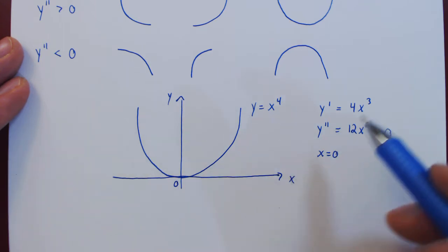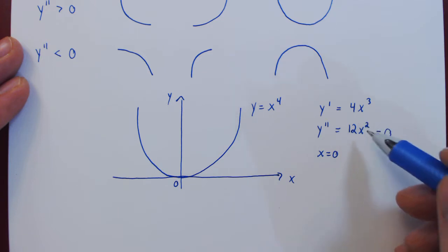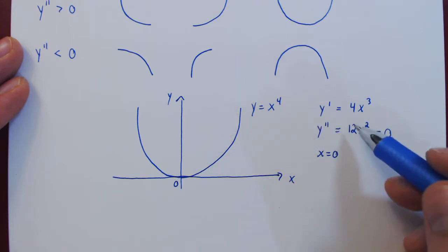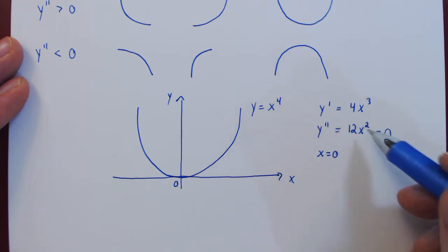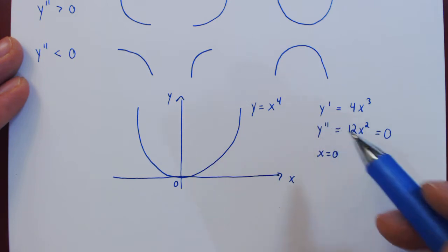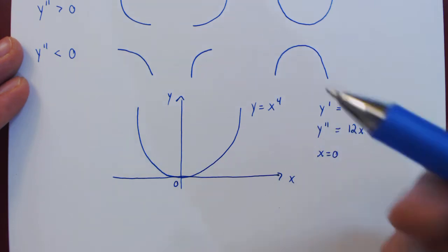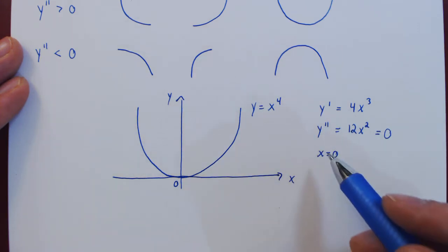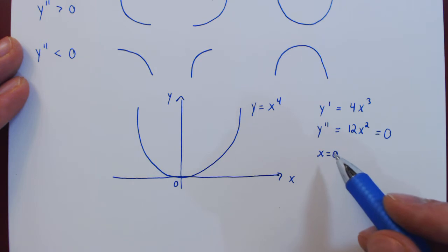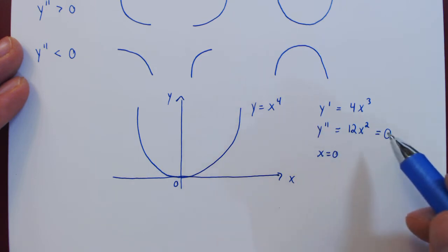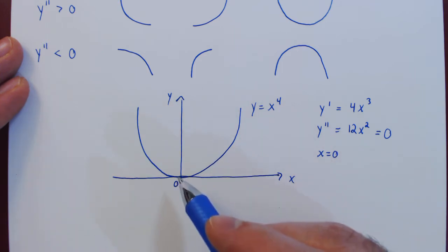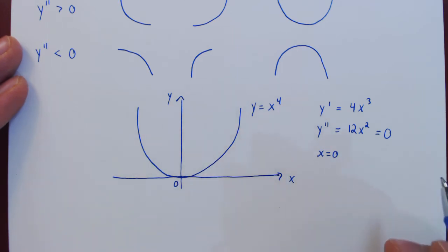This is clear from the second derivative because 12 is positive and x squared is always non-negative. So the second derivative is always either positive or 0. Therefore, since the second derivative can never be negative, the graph of the function is always going to be concave up. So you can see that just because you have a point where the second derivative is 0, that point is not necessarily a point where concavity will change — and therefore what we call an inflection point.